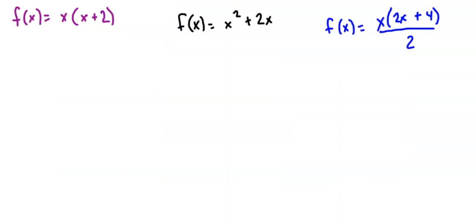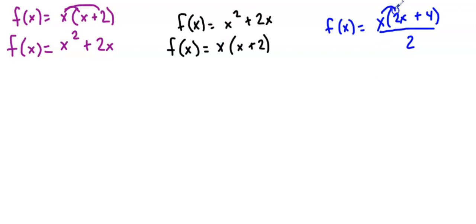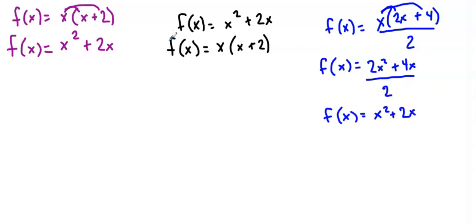We got three different explicit equations, so we need to make sure they are equivalent. Comparing the first and second: distributing x into the parentheses in x(x + 2) gives x² + 2x — matching the second equation. You could also factor the x from x² + 2x to get back to the first. For the third equation, distribute the x and divide both terms by two, and we can see that all three equations are equivalent.